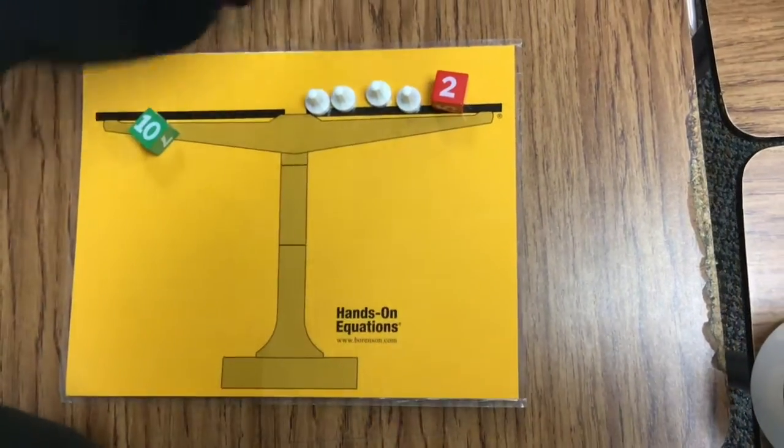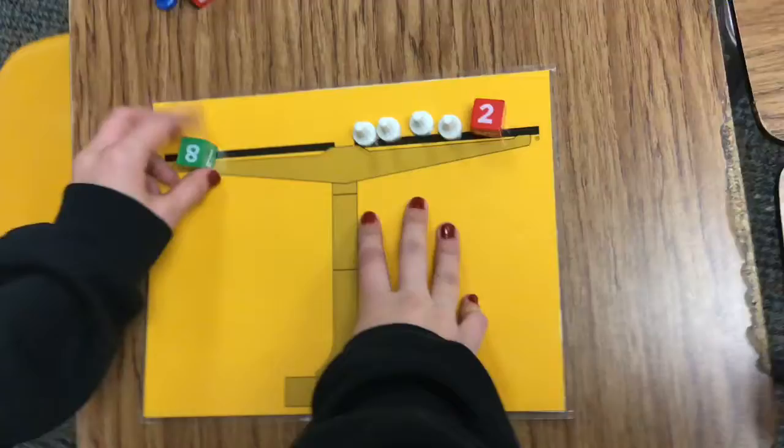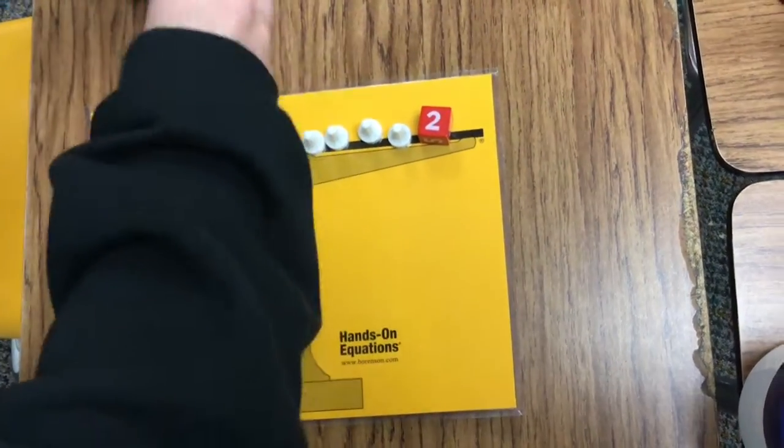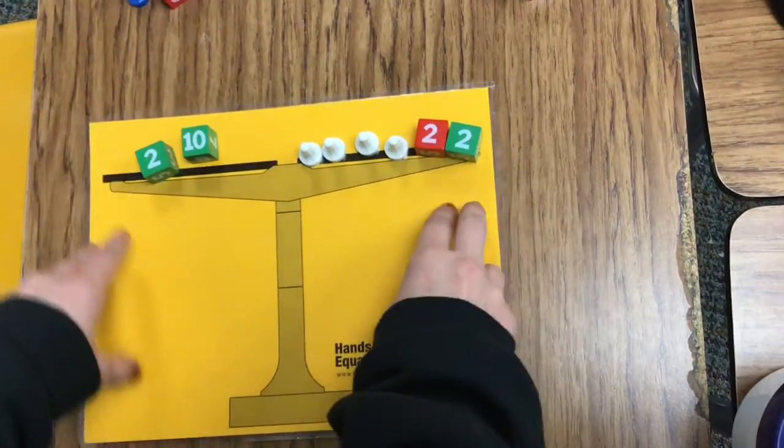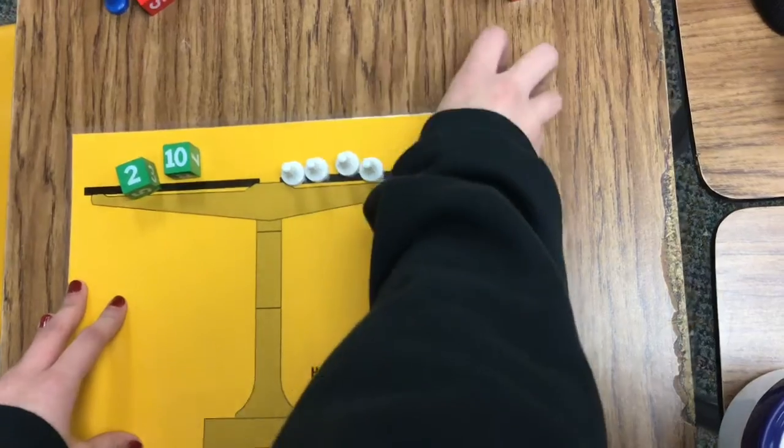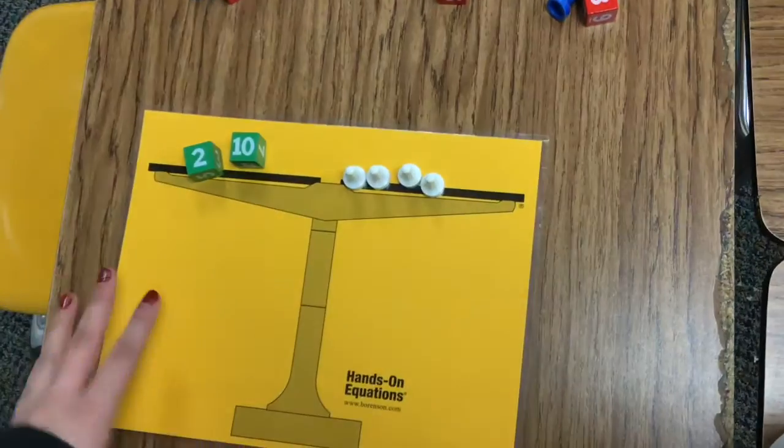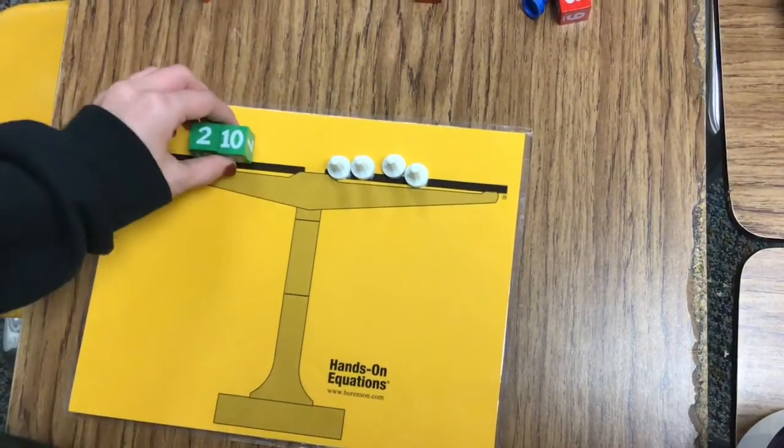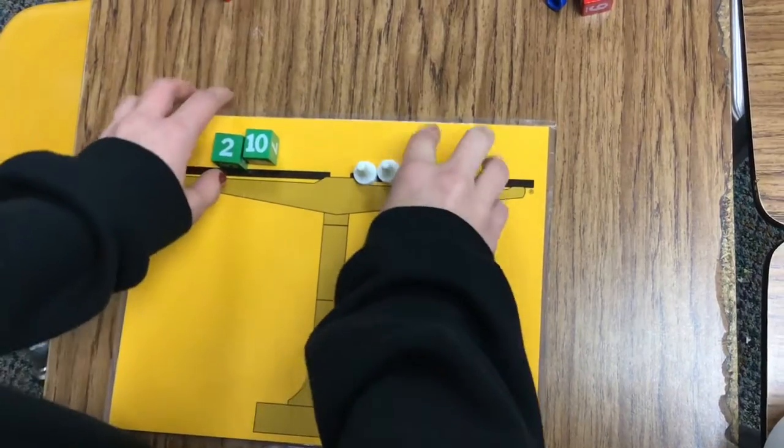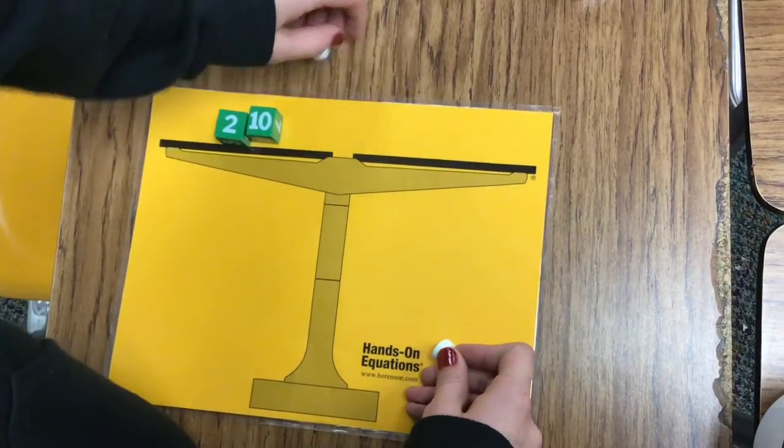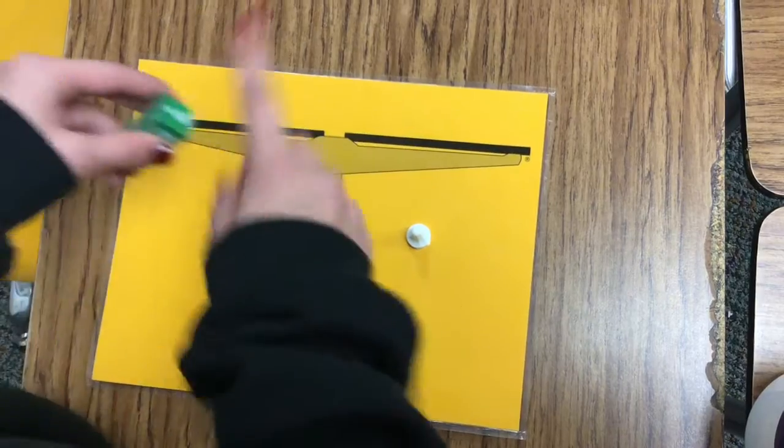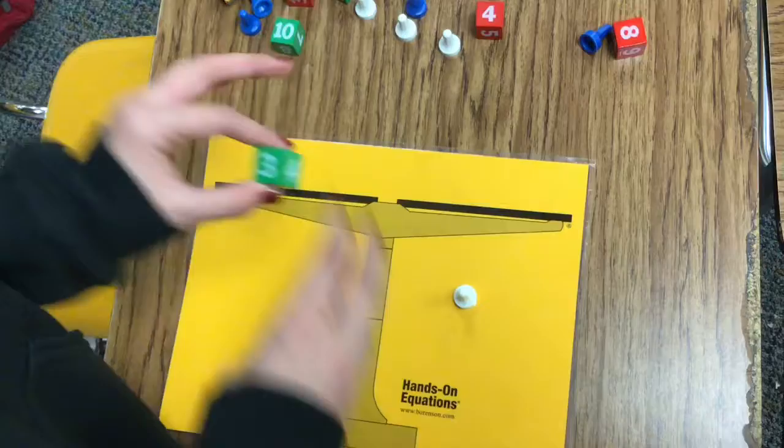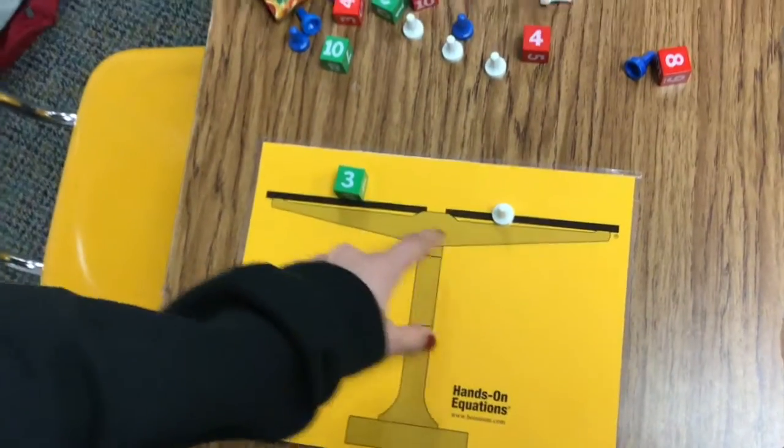Okay, so now we are going to try to take away this too. So we're going to need to add negative 2 on both sides. Alright, so now this would equal negative 12. And these would be the opposite of x. So if we take one of these pawns and we divide this by 4, our answer would be 3. So x equals 3.